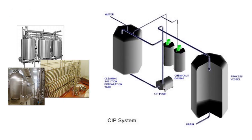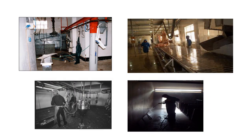Here we can see different kinds of machinery and equipment, and a diagram for the CIP system where the chemical solution is prepared and delivered to the washing point. Different sections of the abattoir or meat plant are shown, illustrating different types of approaches and techniques applied—either spraying or pressure washing—for cleaning in different parts of the abattoir.